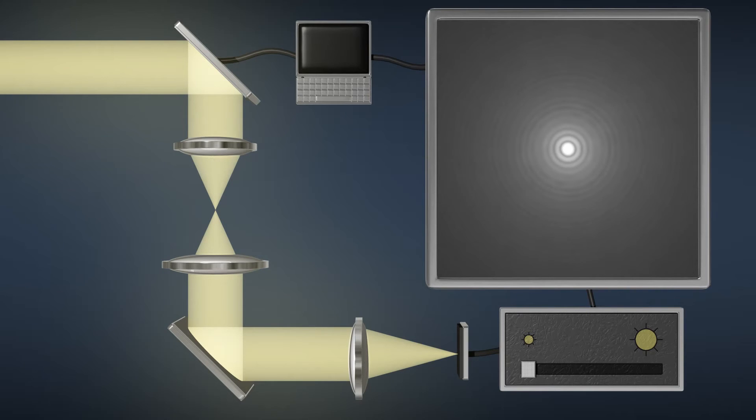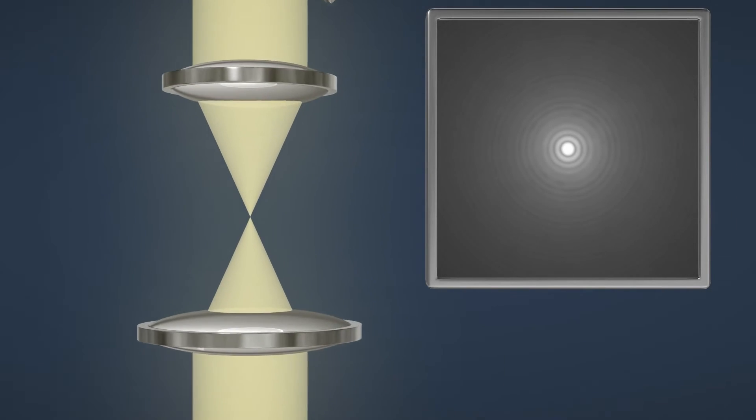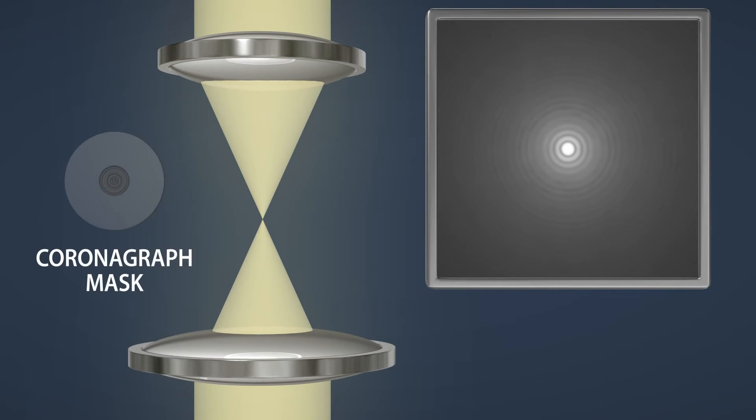As you are about to see, a coronagraph helps directly image faint planets by doing three things. First, a coronagraph blocks most of the incoming starlight using a mask with a dark central region.